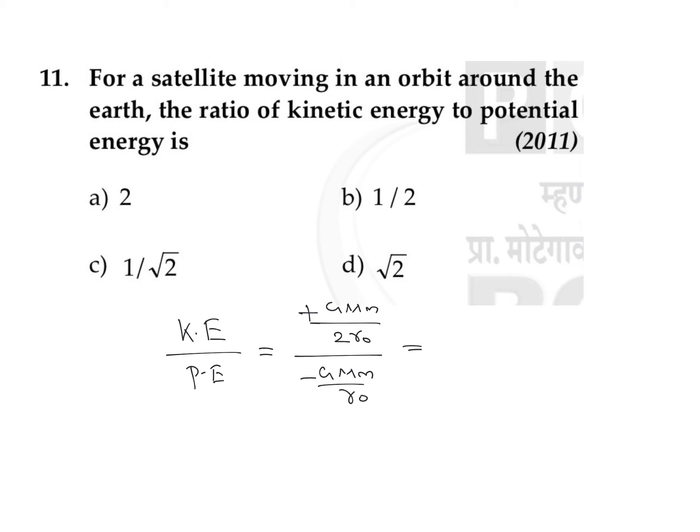So they will be in the ratio — if you are just taking the ratio of their magnitudes, they will be in the ratio 1 is to 2.